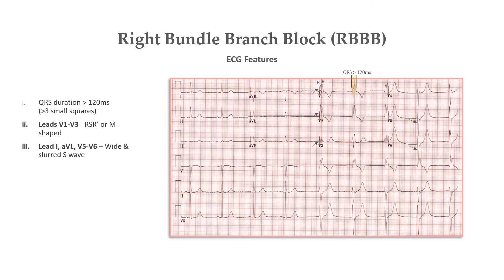Other associated features of right bundle branch block include appropriate discordance, with ST depression with or without T-wave inversion in right pre-cordial leads, that is, V1 to V3.